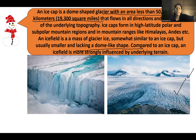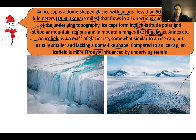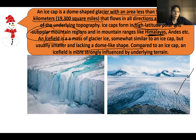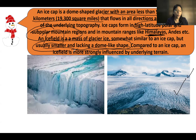Ice caps are found in high-latitude polar areas, sub-polar mountain regions, and even in the Himalayas. Next is the ice field. An ice field is similar to an ice cap, but it is smaller than an ice cap and lacks a dome-like shape. Compared to an ice cap, an ice field is more strongly influenced by the underlying terrain — the landscape on which it is lying.